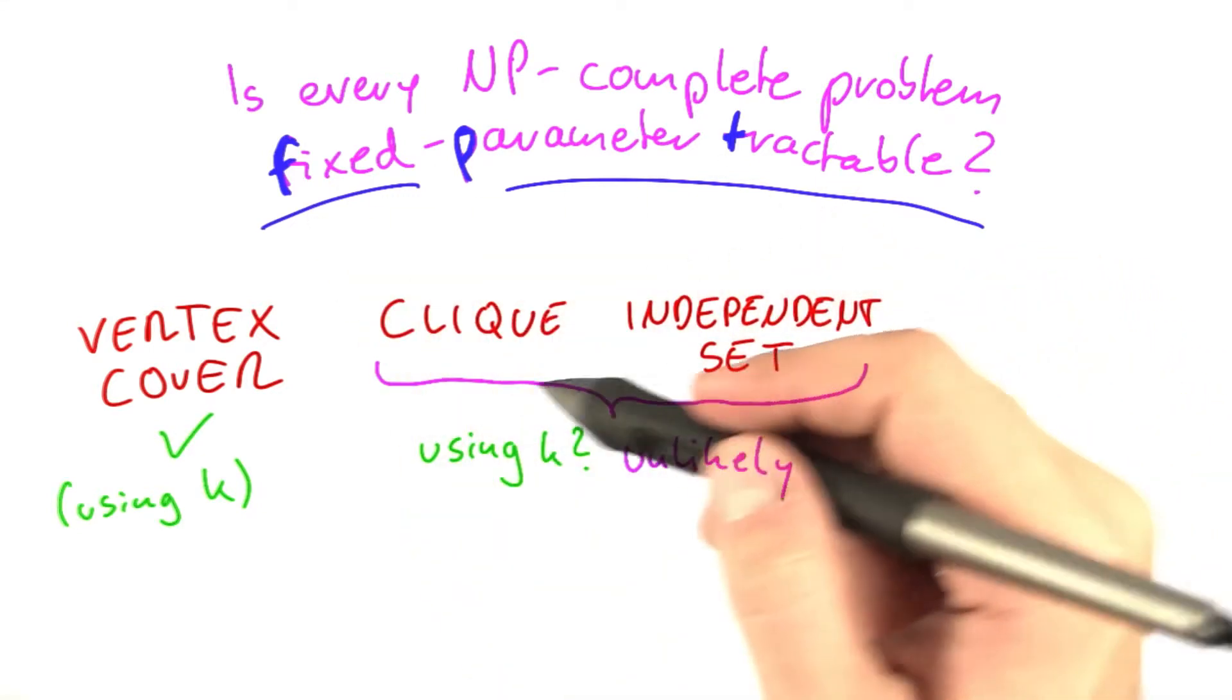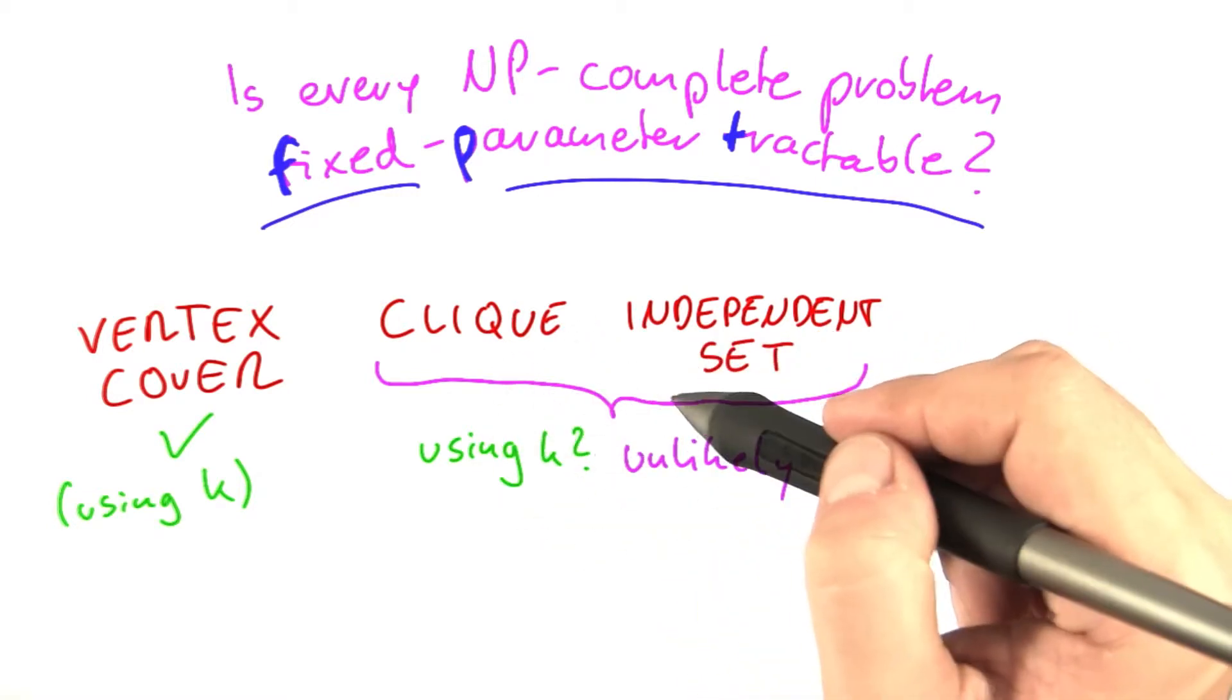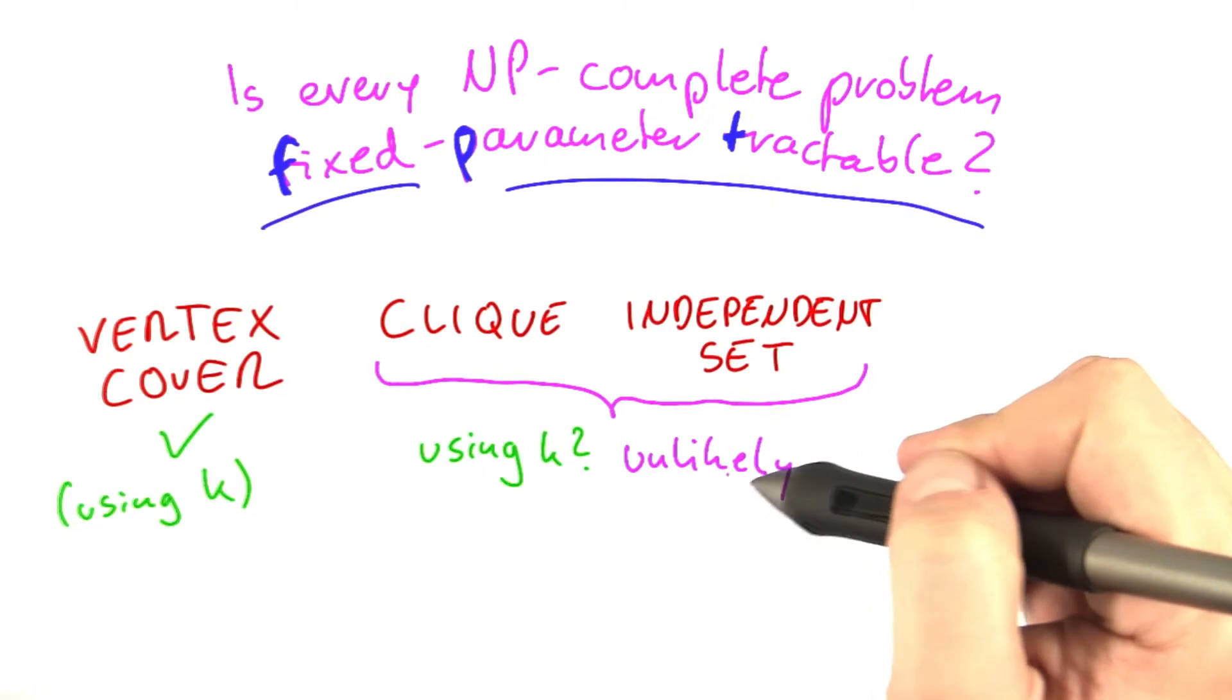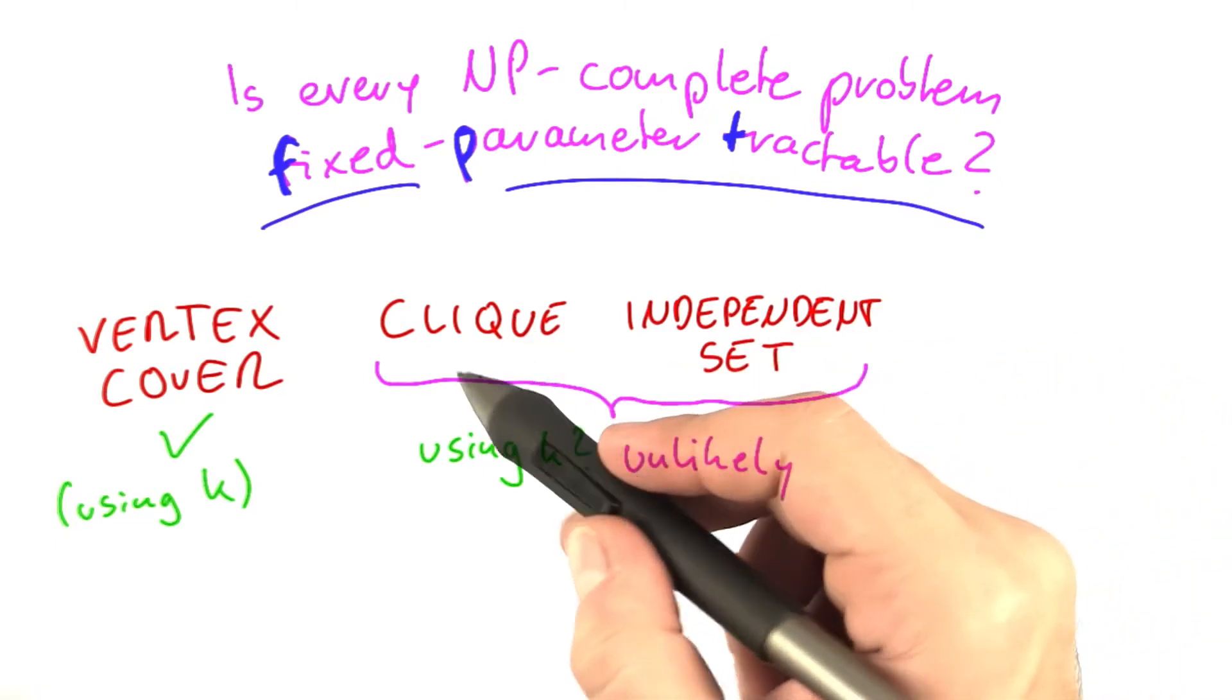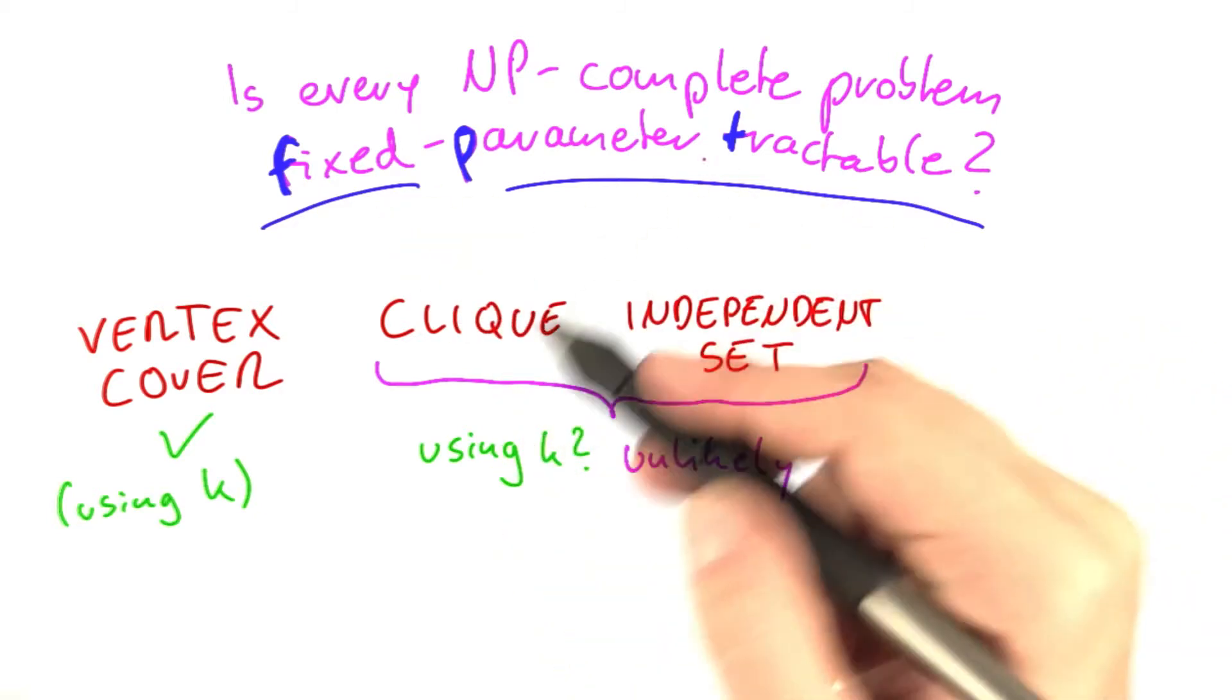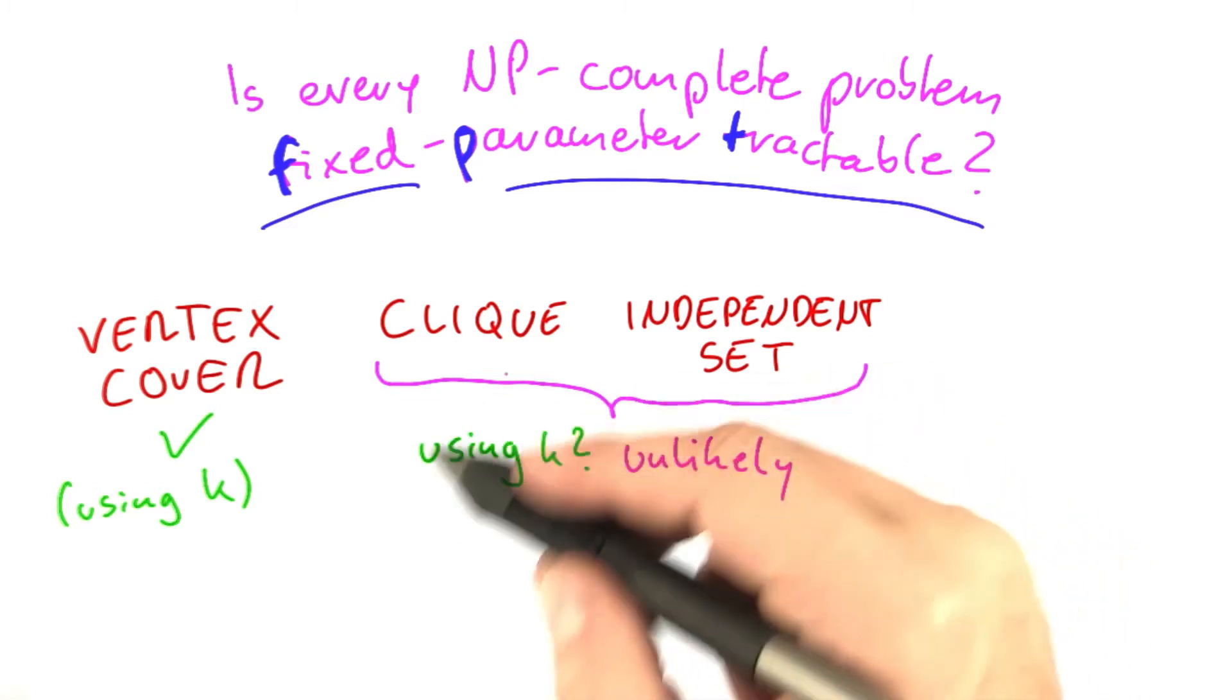So by highly unlikely, what I mean is it would not be something as similar as P equals NP or something like that. But still, there's evidence in a way that is similar to P versus NP that clique and independent set are not fixed parameter tractable, at least if you consider the parameter to be the size of an optimal solution.